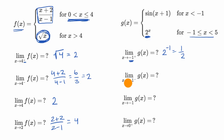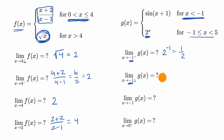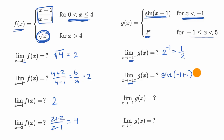What about if we're approaching from the left? If we're approaching from the left, we're in this scenario — we're to the left of x equals negative one. So this is going to be equal to the sine, because we're in this case for our piecewise function, of negative one plus one, which is the sine of zero, which is equal to zero.